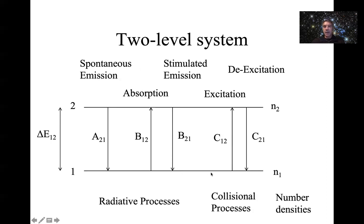There are also collisional processes. Collisions with another atom can cause the electron to be excited from one level up to the next — collisional excitation. Similarly, collisional de-excitation occurs when an atom in an excited state gives its energy to another atom during a collision and drops back down, but without emitting a photon. This process can quench spectral lines. The population in level one is referred to as n1 and in level two as n2 — these are number densities: the number of atoms with an electron in that level per unit volume.